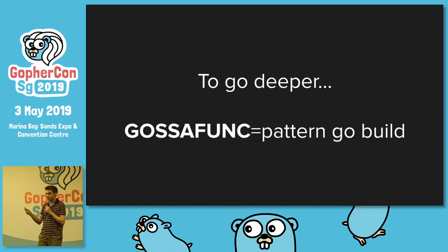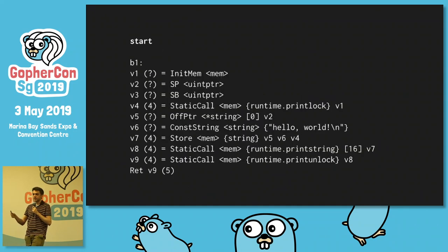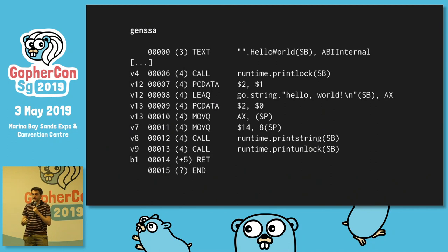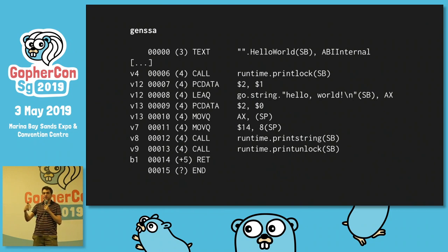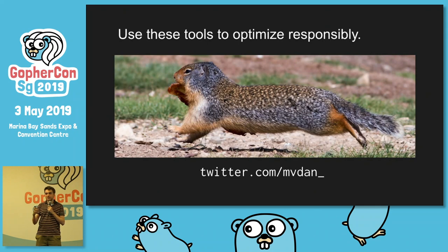If you want to go deeper, you can use GOSSAFUNC — it takes a pattern and when you build a package, for example if I build a file with a hello world function and say GOSSAFUNC equals hello world go build, it dumps an SSA HTML file. It's going to show all the steps the compiler went through, from how it initially interpreted the code all the way to the native assembly it compiled into — optimizations, SSA passes, and so on. There are also a couple of READMEs you can read if you want to learn more. The point I want you to take away is that optimizing is good and fun, but you should reason about it, and when you do decide to optimize, use the right tools.